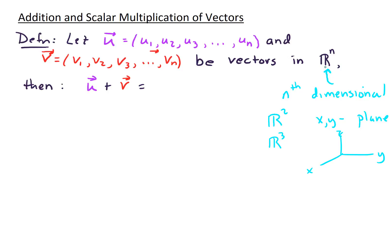Now, to add up vectors u and v, what we're going to do is add up component-wise. So in the first component, we'll have u1 plus v1, and in the second component, we'll have u2 plus v2, and so forth.